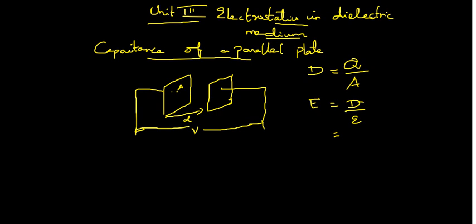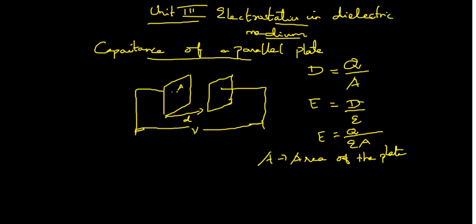These things we have already studied. So, for D, you know Q divided by epsilon into A. From this, you can get the value of E. A is the area of the plates — if it is square, then the area of the square; if it is a rectangle, then the area of the plate. And d is the separation between the plates.